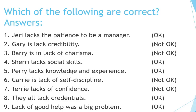Number 2: Gary is lack credibility — not OK. It should be: Gary lacks credibility. Number 3: Barry is in lack of charisma — not OK. It should be: Barry lacks charisma. Number 4: Sherry lacks social skills — OK. Number 5: Perry lacks knowledge and experience — OK.